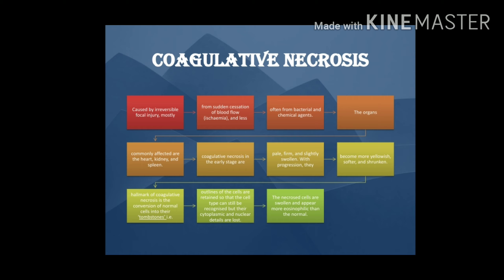That is why it is called a 'tombstone.' The tombstone appearance means the outer structure of the cell is identifiable and recognized, but the internal cytoplasm and nucleus details are lost.